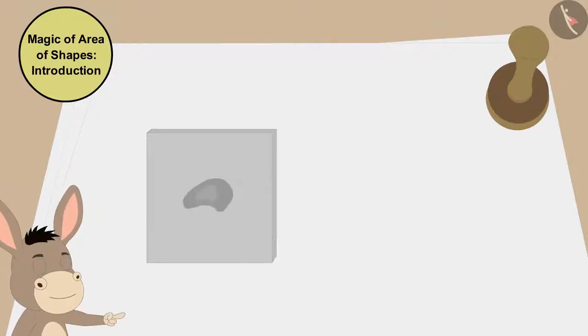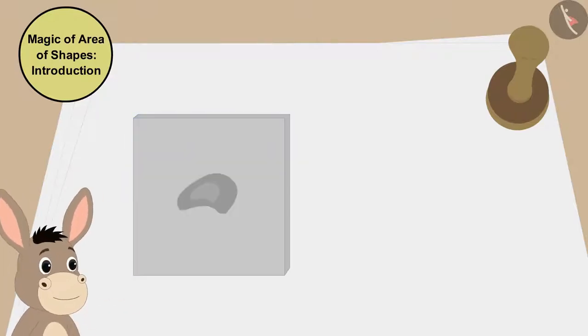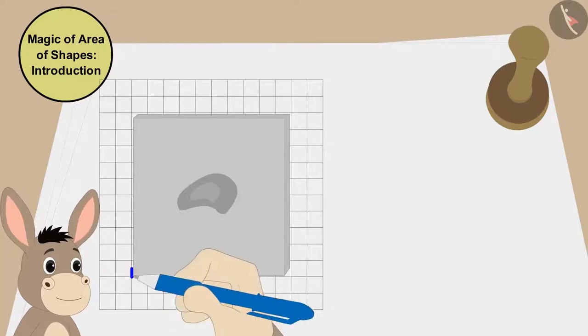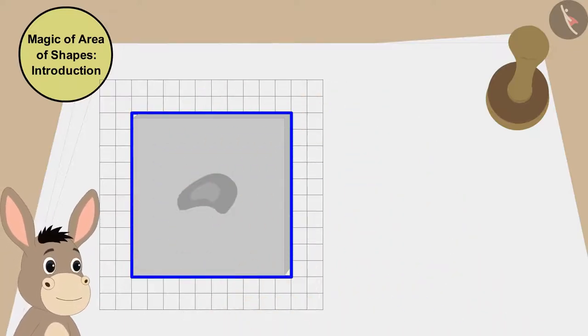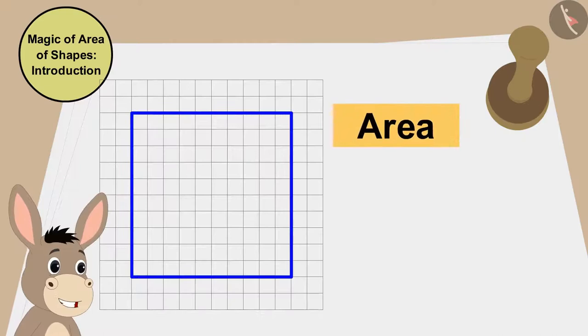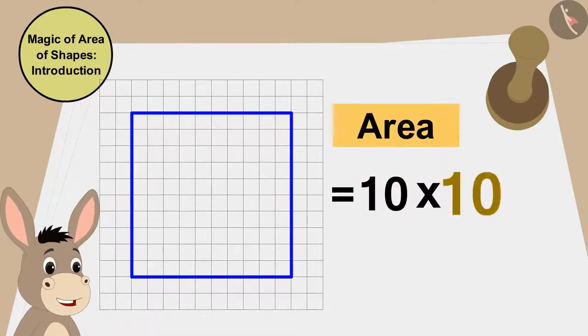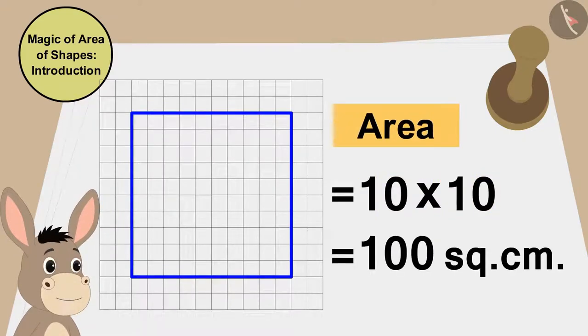Bholla first drew the outline of the cashew barfi on a grid paper like this. The area of this cashew barfi is 10 times 10, that's 100 square centimeters.